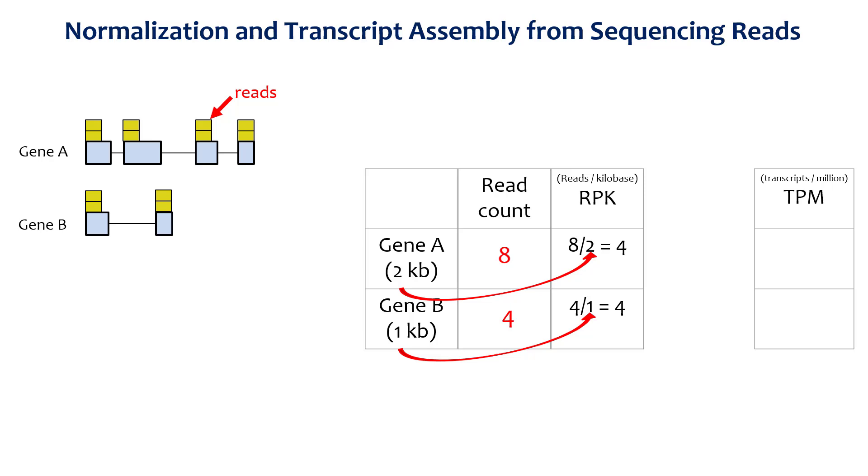This step gives a value of RPK, or reads per kilobase. As you can see, gene A is twice as long as gene B, so even though it has twice the number of read counts, it has the same RPK value.